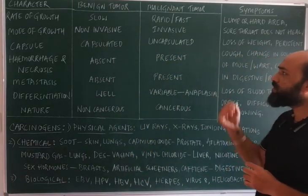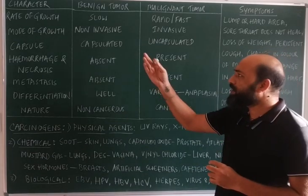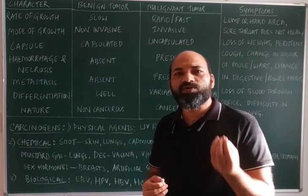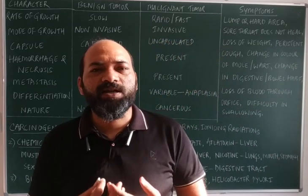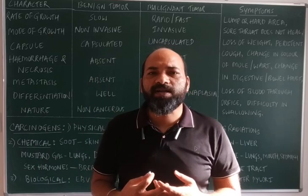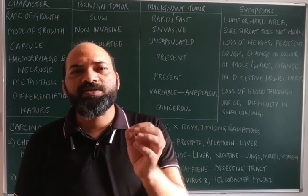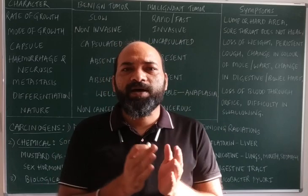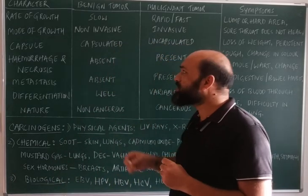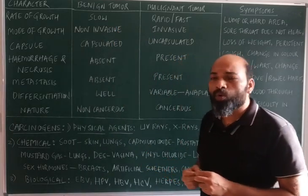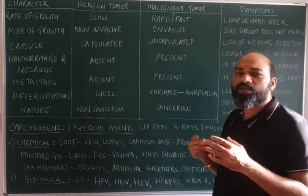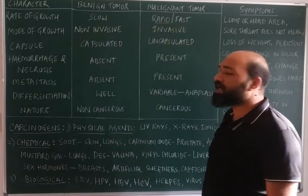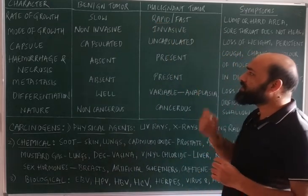The first difference is the rate of growth. Benign tumor growth is very slow and takes more time. The cells continuously proliferate and form a tumor that is confined to a particular place — it is localized. The malignant tumor cells keep on dividing rapidly, so the rate of growth of malignant tumors is fast.